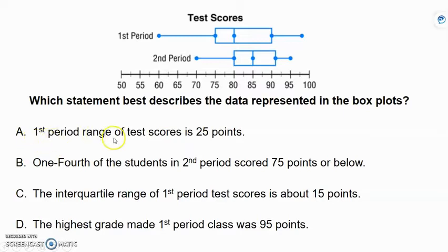A, first period range of test scores is 25 points. Okay, we're looking at test scores, and we're looking at first period. Okay, so range. Remember, that is the largest number minus the smallest number. So our largest number is between 95 and 100. Well, it looks like it's probably about at 98. Because between 95 and 100, we add those two together and divide by 2. That's 97.5. So it's probably a 98 here. And my lowest test score is at 60. So 98 minus 60 is 28 points. So this answer is not correct.